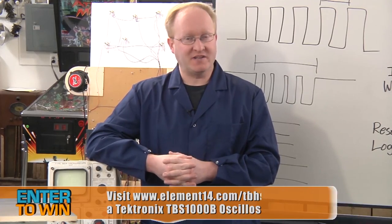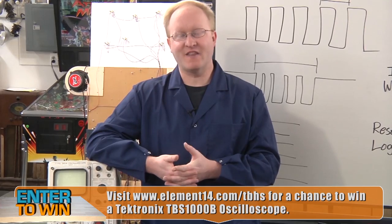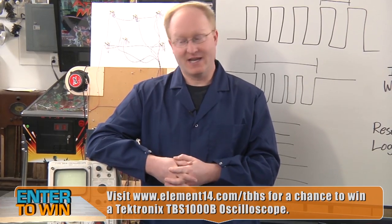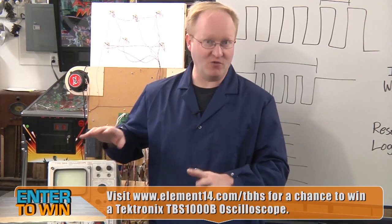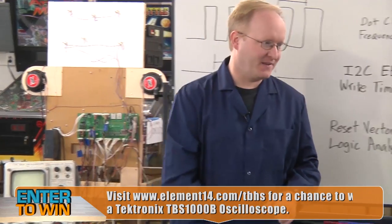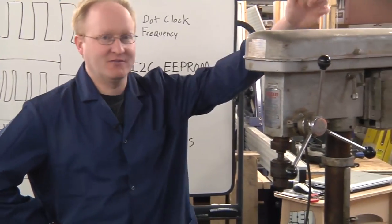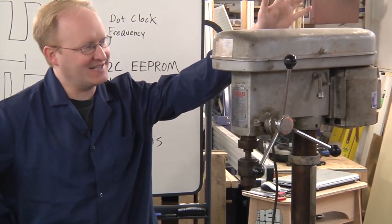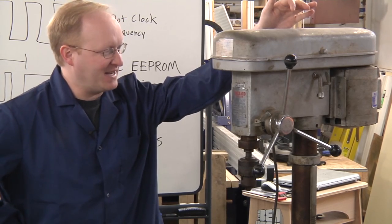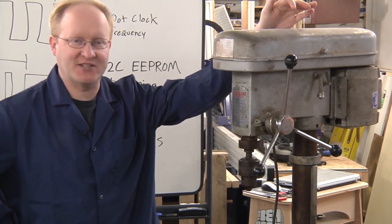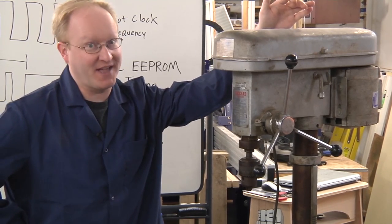Hopefully this episode gave you a good idea of what you could do with oscilloscopes and how they might pertain to your own projects. Now, oscilloscopes like this aren't the only old thing we have laying around the shop. We've also got this quite old drill press. In the next episode, we're going to see if we can fix this thing up and make it a smooth running machine that's great for shop use. We'll see you then.